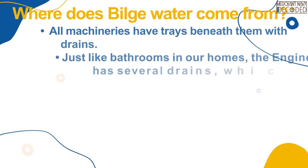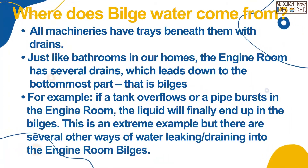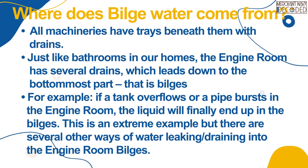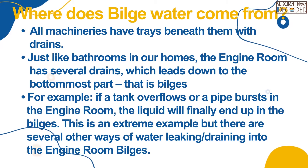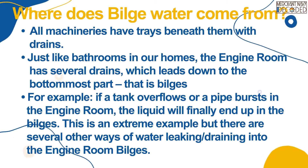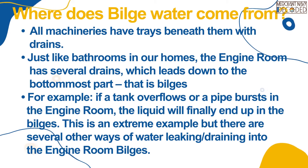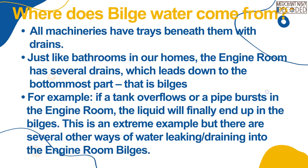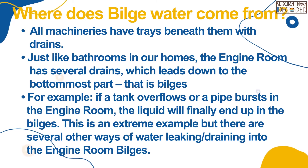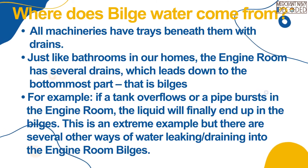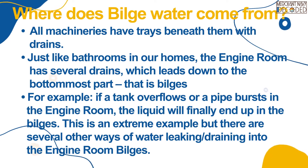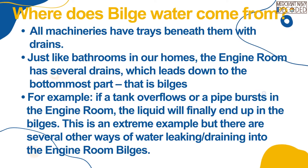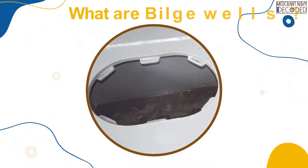Where does bilge water come from? All machineries have trays beneath them with drains, just like bathrooms in our homes. The engine room has several drains which lead down to the bottommost part, that is the bilges. For example, if a tank overflows or a pipe bursts in the engine room, the liquid will finally end up in the bilges. This is an extreme example, but there are several other ways of water leaking or draining into the engine room bilges.